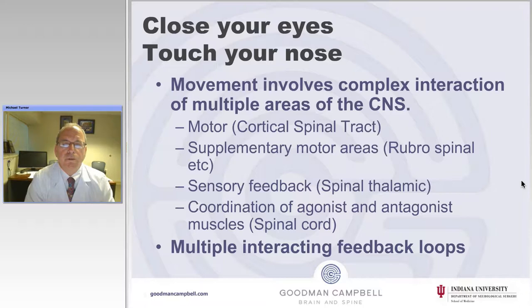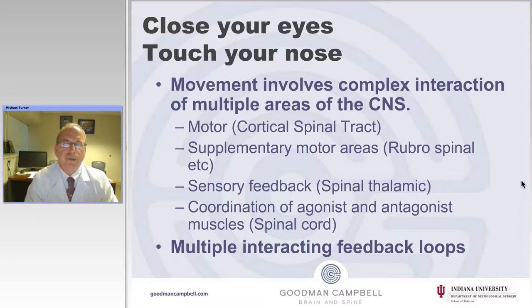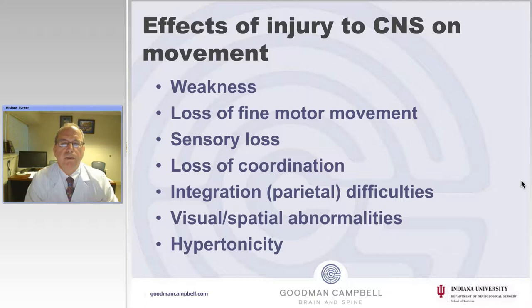This uses a combination of motor tracts — the corticospinal tract, supplementary motor areas, rubrospinal tract, and other tracts — as well as sensory feedback along the spinothalamic tract, and coordination of agonist-antagonist muscles, which is often done at the spinal cord level. This is accomplished through feedback loops within the brain. Some of these feedback loops are stimulating, some are inhibitory. When there is damage to the brain, it affects movement in many ways, not just causing spasticity.